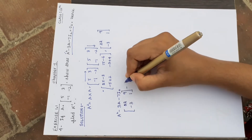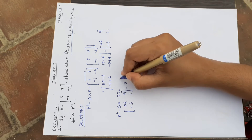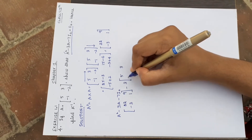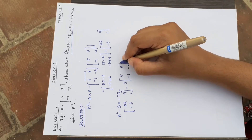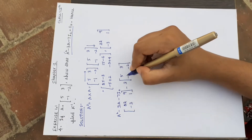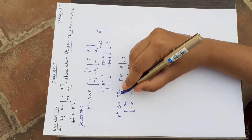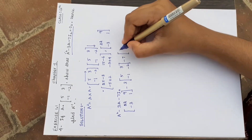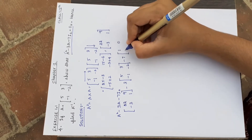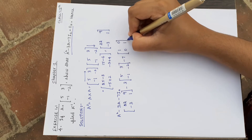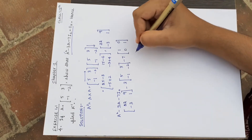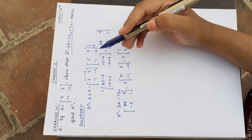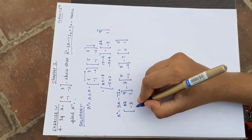Now substituting into the left hand side: A square minus 3 times A matrix minus 7 times I₂. A matrix from the question is [[5, 3], [-1, -2]]. I₂ is the identity matrix of order 2, which is [[1, 0], [0, 1]]. This should equal null matrix on the right hand side.